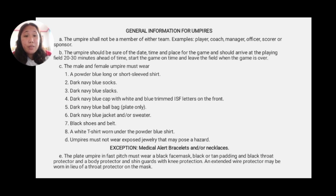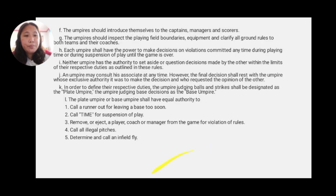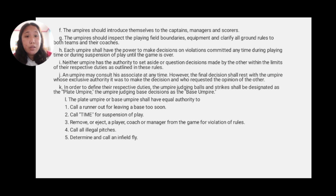Letter E: the plate umpire must wear a black face mask, black or tan padding, black throat protector, body protector, and shin guards with knee protection. An extended wire protector may be worn in lieu of a throat protector on the mask. Letter F: umpires should introduce themselves first to the captains, manager, and scorer. Letter G: umpires should inspect the playing field, the boundaries, the equipment, clarifying all the ground rules with both teams and their coaches. Umpires should arrive early to inspect the playing area to ensure there is no hazard on the ground and that all equipment is complete, so as not to waste time.